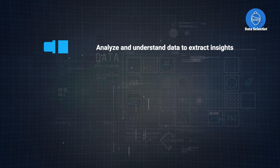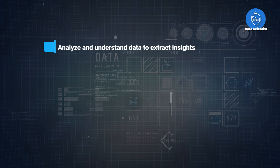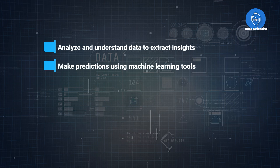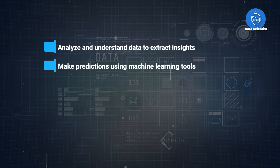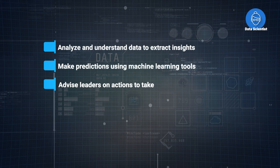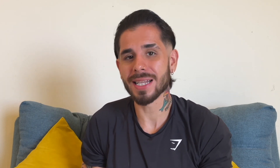Lastly, let's look at the role of a data scientist. Data scientists act as advisors for data-driven decisions. They analyze and understand data to extract insights, make predictions using machine learning tools like TensorFlow, and advise senior leaders on actions to take based on those insights. It doesn't take Sherlock Holmes to notice the overlap between a data scientist and a data analyst — at smaller companies, one person might have to handle tasks across both roles. But the important thing to remember is that a data scientist focuses more on forecasting and strategic advice.